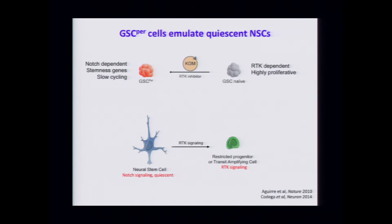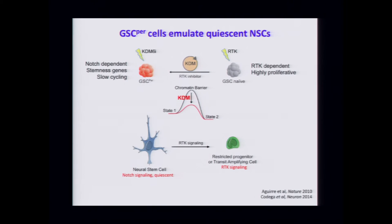The persister cells are emulating a quiescent neural stem cell state. Starting from naive GSCs that are proliferating and RTK-dependent, through demethylation and a resetting of their epigenetic state, we get persister cells that are very slow cycling, upregulate very primitive stemness genes, and are notch-dependent. This inversely parallels normal neural development, where quiescent neural stem cells have notch signaling and switch to an amplified state with RTK signaling. Given that primary tumor cells look more like this persister state and are slow cycling, perhaps notch inhibitors or inhibitors of chromatin enzymes might synergize with RTK inhibitors to better target these glioma cells.